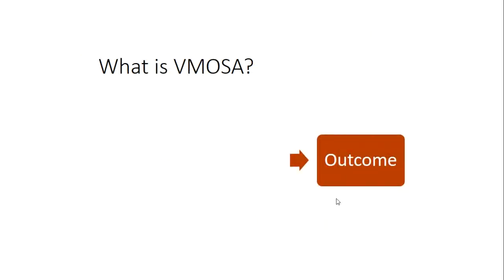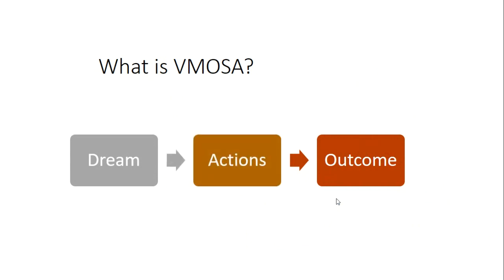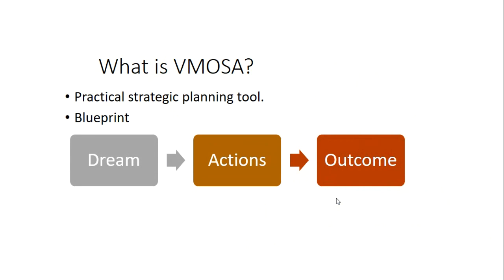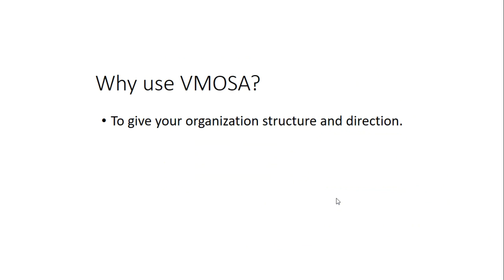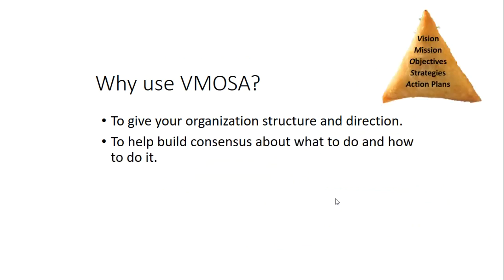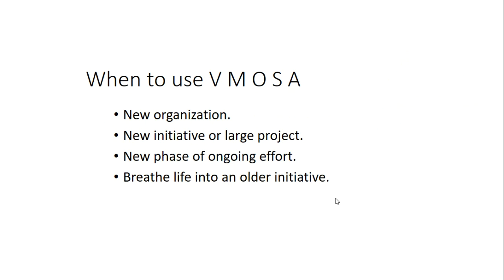Strategic planning is an important practical tool and an ongoing process. It gives organizational structure, direction, and focus. It helps institutions clarify their direction and coordinate organizational effort. Strategic planning helps an organization plan initiatives and ongoing efforts to address future challenges in any product or market.